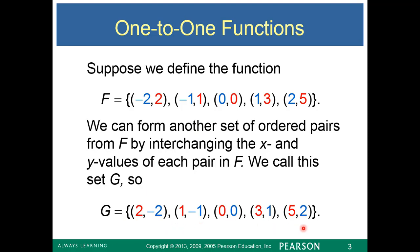Notice that this represents a function because every x value goes to one and only one particular y value. So g is the inverse function, and f is a one-to-one function. If we can take f and flip the x into y and get another function, then we say that f is one-to-one.